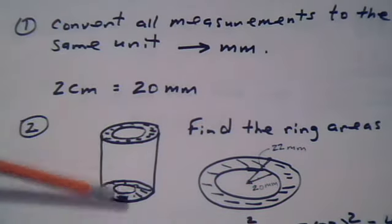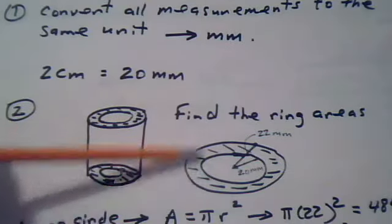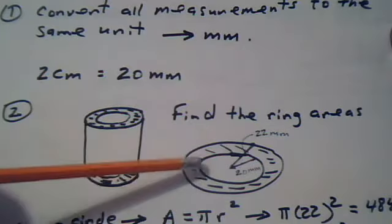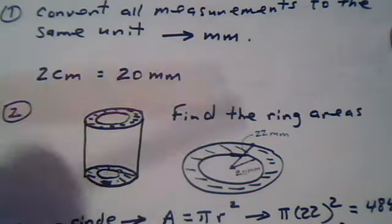Let's find the area of the rings first. Notice the rings are made of two circles. To find this area, the ring area, find the area of the big circle and subtract the area of the smaller circle, and that will leave behind the ring area.